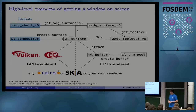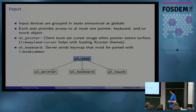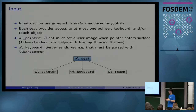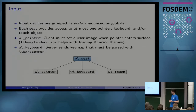Once you've done all that, you will actually have a window on screen. For interactivity, how do you get input? There's a concept called a seat, which is a group of input devices — a pointer, a keyboard, and a touch device. Each seat can have at most one of those devices. You register for the global and take the seat. These seats can actually be hot-plugged at runtime, so you should always be prepared for a seat to appear or disappear, and your application should handle that gracefully.